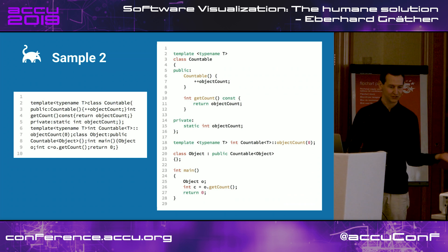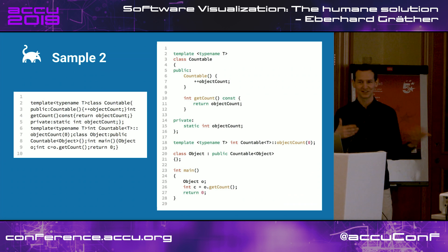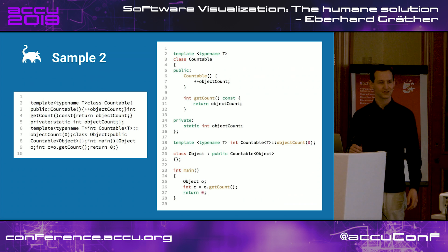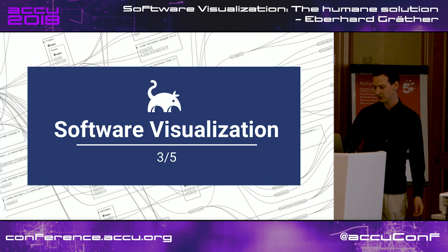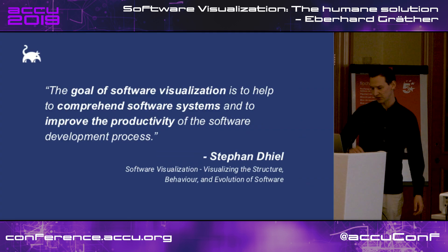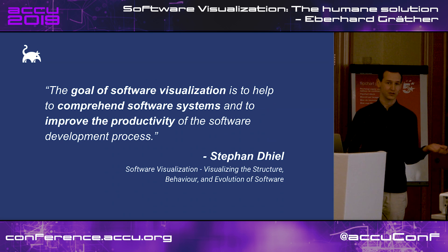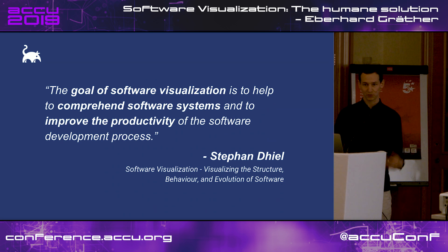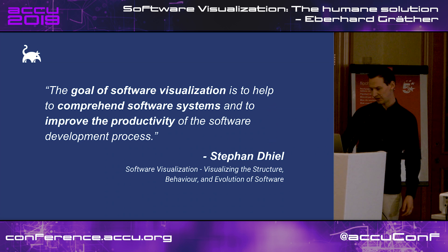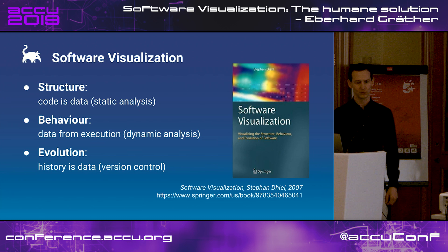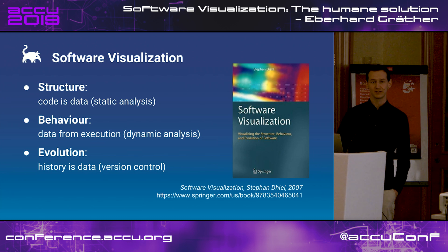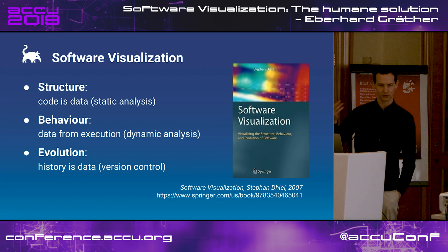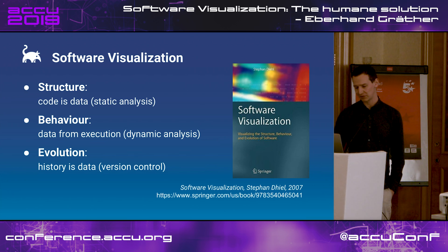So the question is: can this apply to source code — can we make it easier to understand? Let's look at software visualization, which is concerned with the comprehension of software systems and raising productivity. Stefan Diel further distinguishes three areas in the field: structure, behavior, and evolution visualization, depending on which data is used to create the visualization. Let me give some examples for all of them.